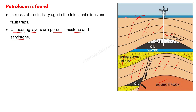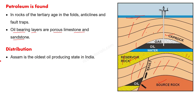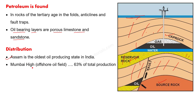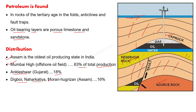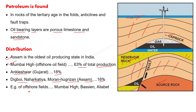The oldest oil-producing state in India is Assam — keep that in mind. Mumbai High is the major offshore oil field, contributing 63% of India's total oil production. Gujarat accounts for 18% of production, with fields at Kalol and Ankleshwar. In Assam, places like Digboi, Naharkatiya, Moran, and Hugrijan account for about 60% of onshore production. The offshore fields include the Mumbai High, and there are also fields in the Krishna-Godavari Basin region.